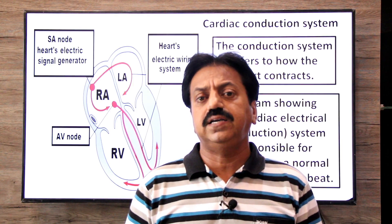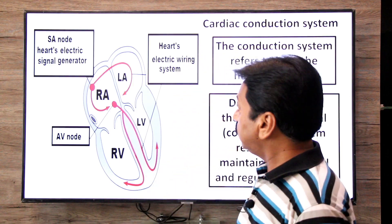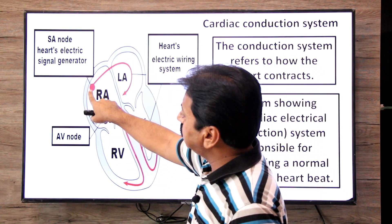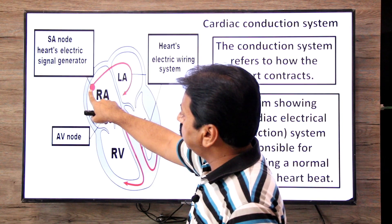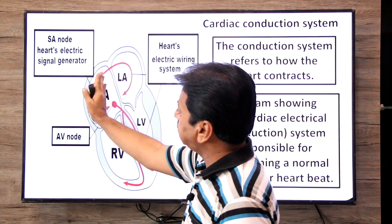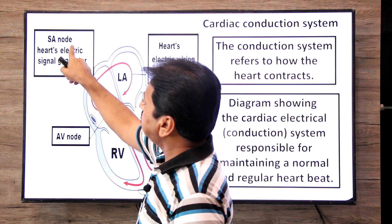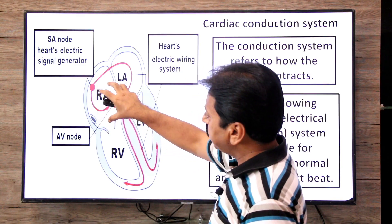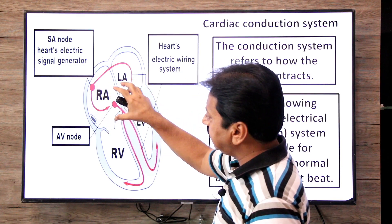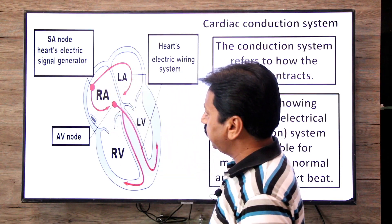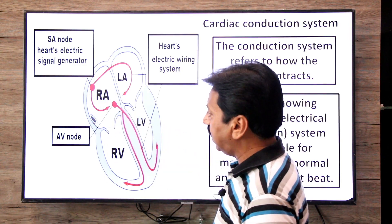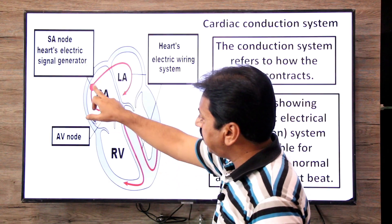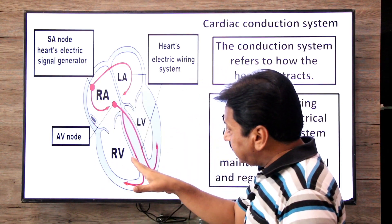The first component is the SA node — the sinoatrial node — which is located on the upper side of the right atrium. The SA node is the heart's electrical signal generator. It generates the electrical signal that starts heart contraction, so this is the first component and the first to generate the signal.